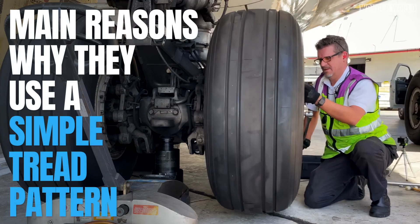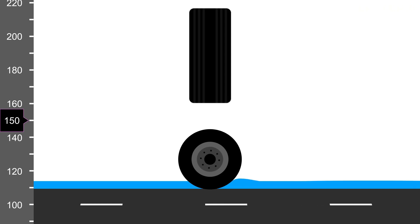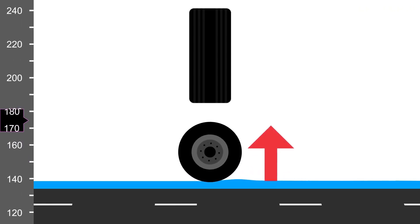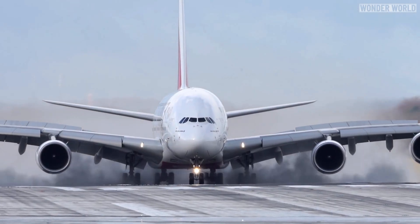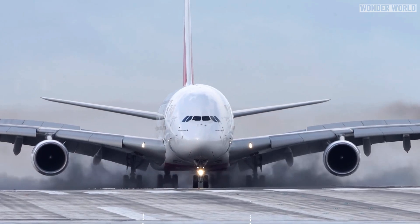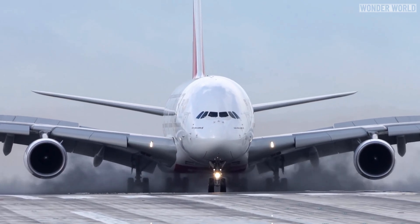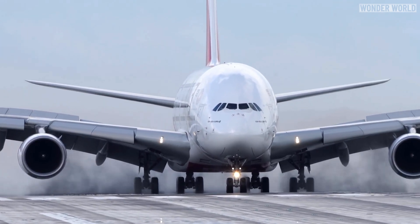Here are the main reasons why they use a simple looking tread pattern. The main purpose of the straight treads on airplane tyres is to expel water at high speeds and prevent hydroplaning — a condition where the tyre loses contact with the runway due to skidding over a layer of water, resulting in barely any braking action. The straight grooves are designed to efficiently channel water away from the tyre's surface during landings on wet runways, as the water can collect in and be pushed through these straight grooves.